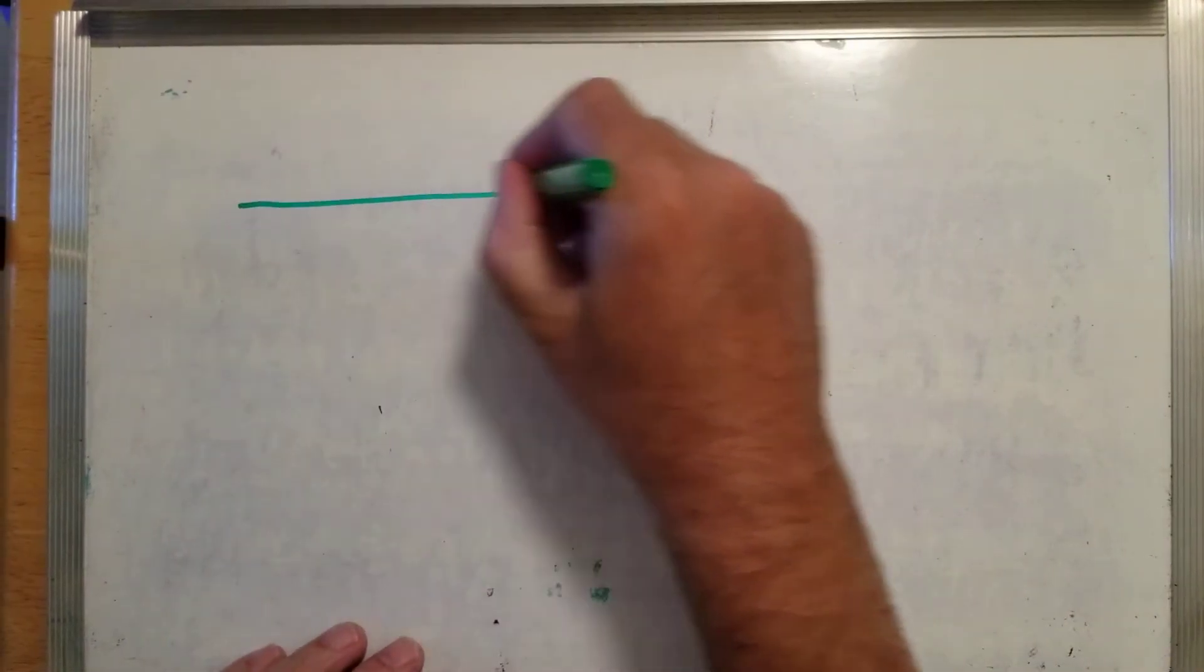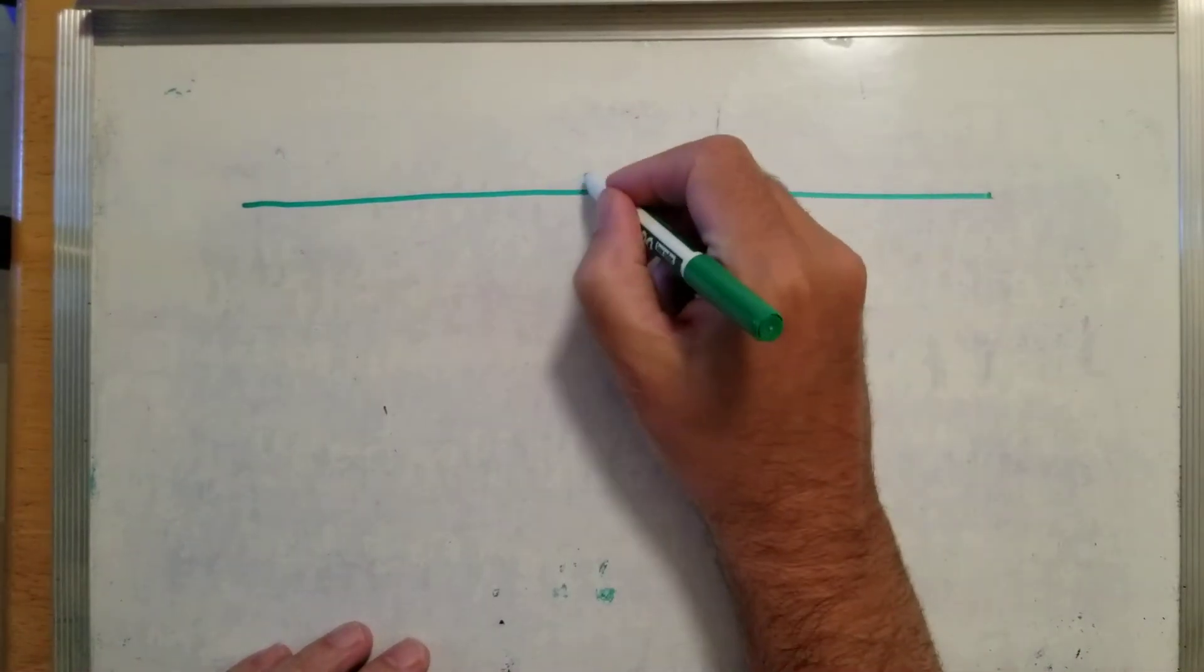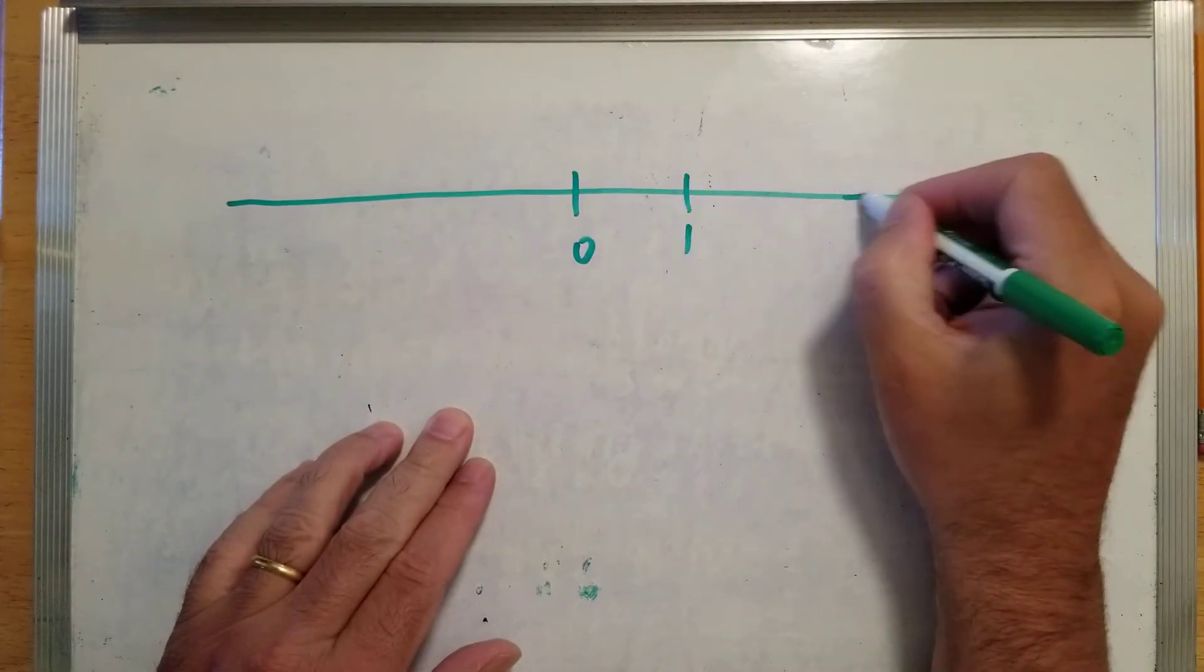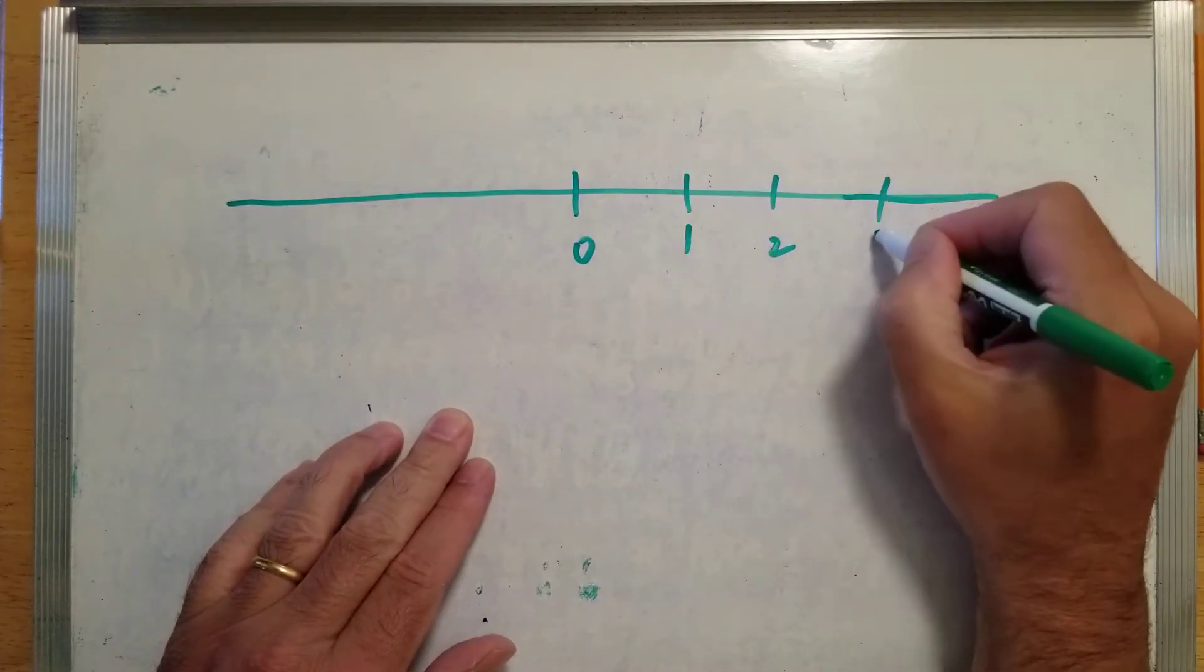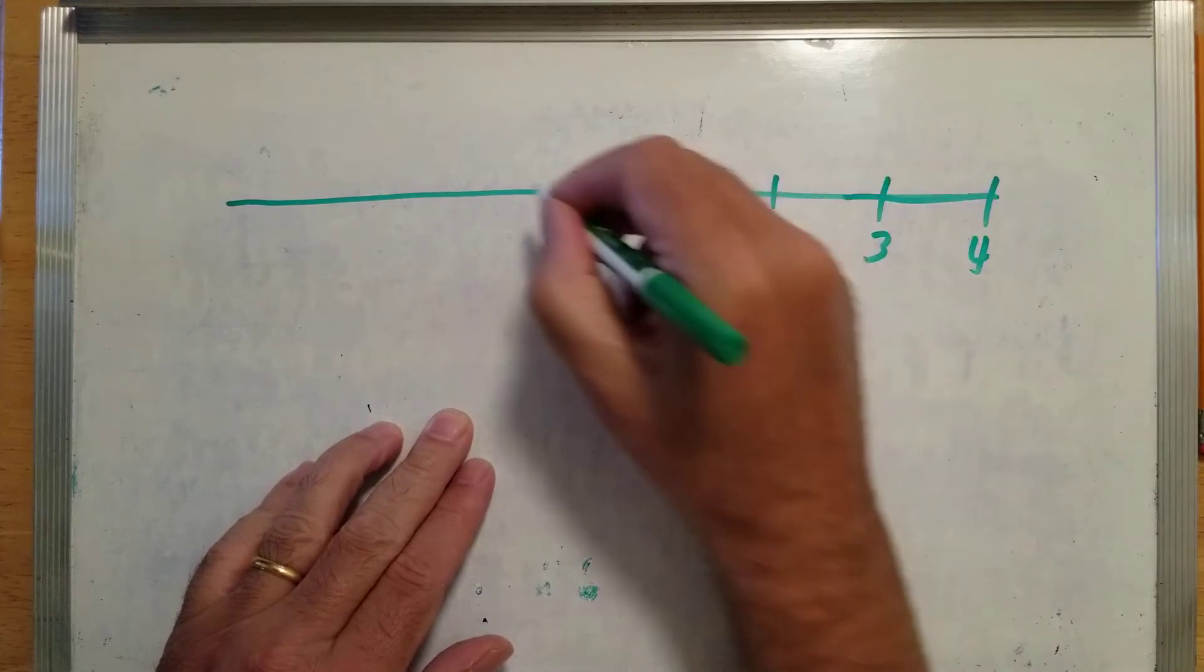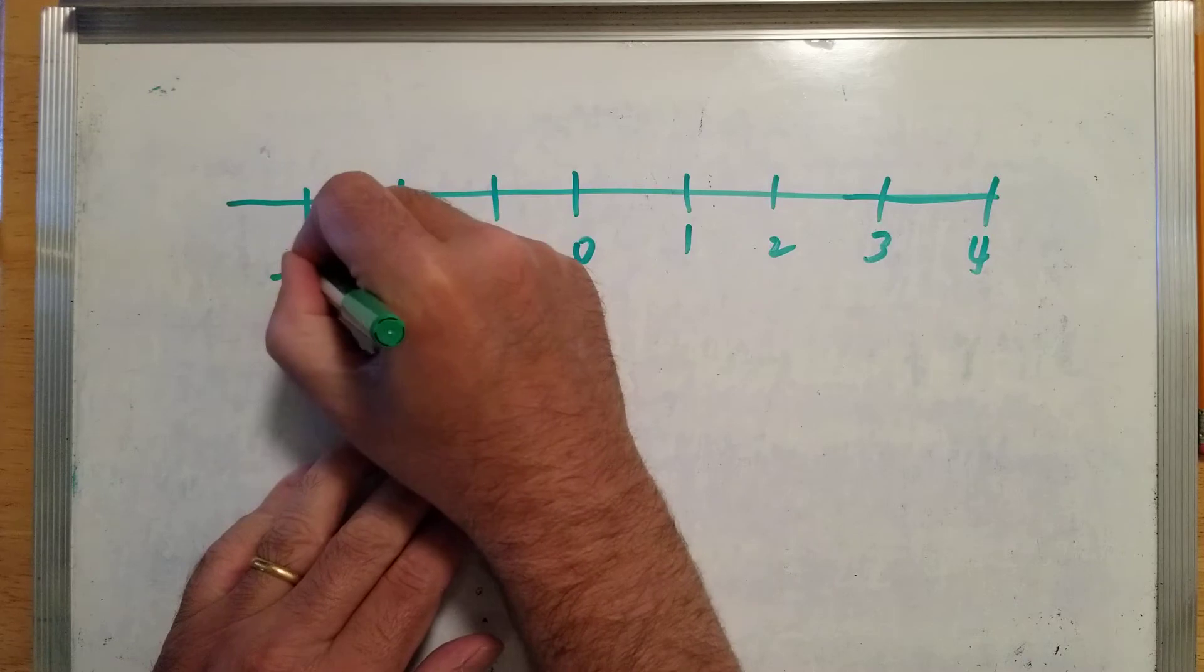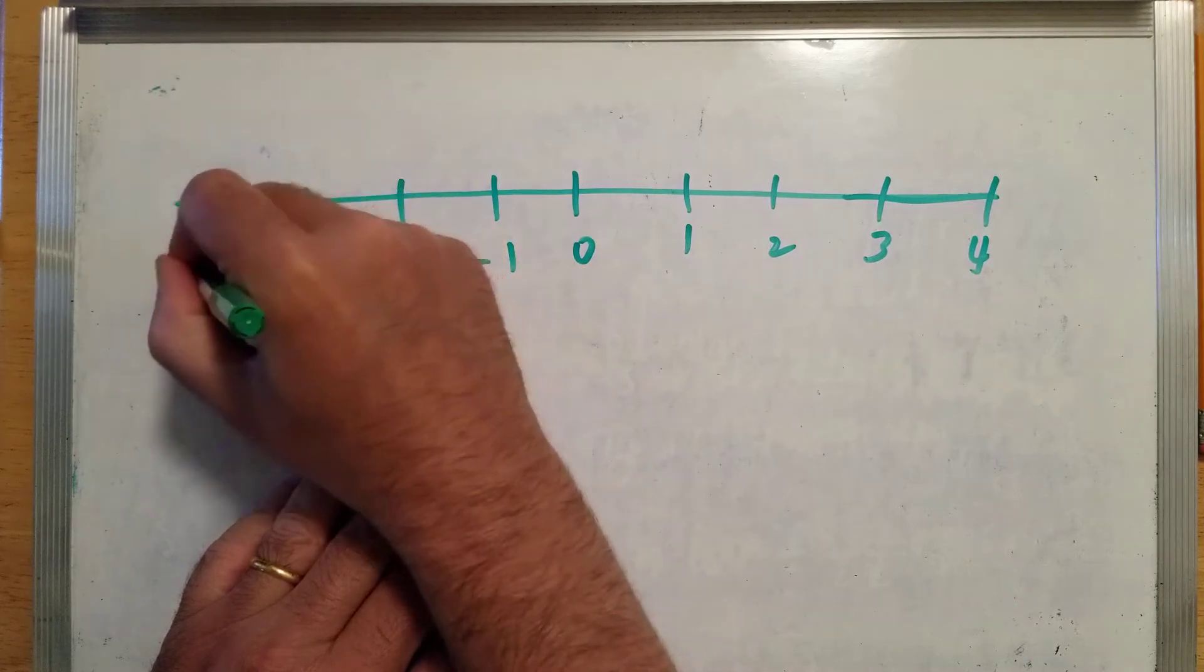Okay, here's a picture of the number line. Here's zero and one, two, three, four, negative one, negative two, negative three, negative four.